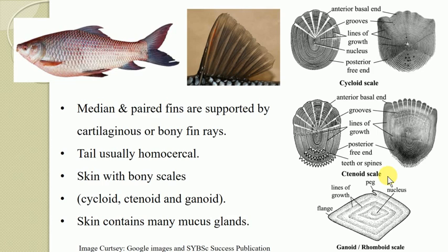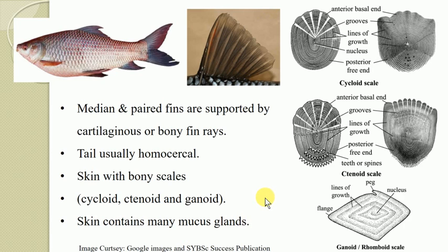The skin also contains many mucus glands. Due to the presence of these mucus glands, which secrete a large amount of mucus on the surface, the skin of bony fishes is always slimy and moist.